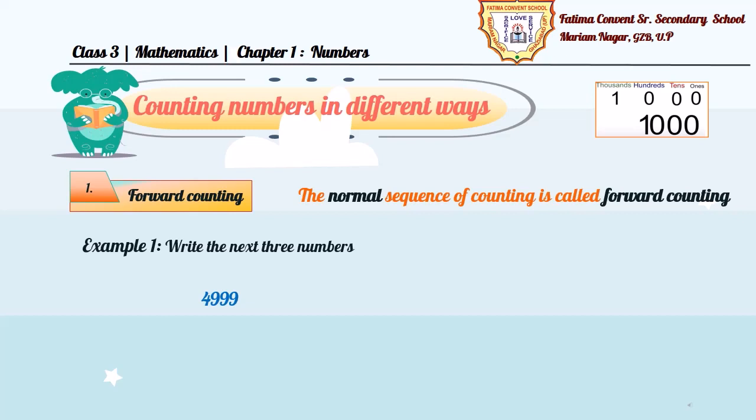First, 4999. This is a four-digit number. So, we need to write the next three numbers by forward counting. So, the answer will be 5000, 5001, and 5002. In the same way, 7001, the forward counting will be 7002, 7003, and 7004.